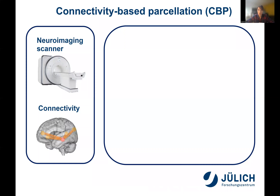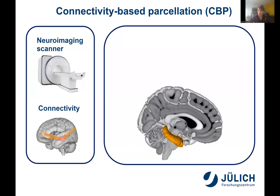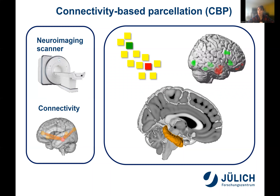I would like to focus on connectivity-based parcellation, which represents a very large portion of the literature. The idea is relatively simple: if you have connectivity features from neuroimaging data — whatever type of connectivity — and you are interested in a specific region such as the hippocampus, you look at the voxels within that region. If you take two different voxels and examine their connectivity profile across the brain, you can see that they differ in their profile. Doing this for all voxels within the hippocampus, you can cluster them according to their connectivity profile, distinguishing for example anterior and posterior regions.